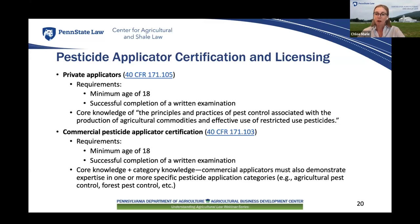Under EPA standards for certification of private applicators, private applicators must be a minimum of 18 years old and successfully pass a written examination. Private applicators must demonstrate core knowledge including: ability to read and understand pesticide labels and instructions, recognize pesticide risks and take necessary safety precautions, understand environmental impacts of pesticide use, properly identify target pests and select suitable pesticides, select and maintain appropriate equipment, choose the most effective and least harmful application method, and comply with state, tribal, and federal pesticide regulations. Commercial applicators must also be at least 18 and pass an examination, and are additionally required to demonstrate knowledge in at least one specific category of pesticide application.